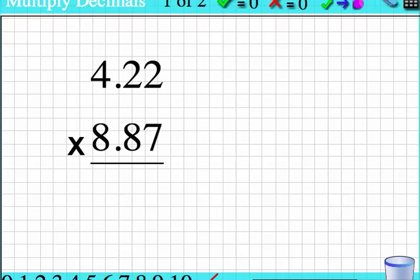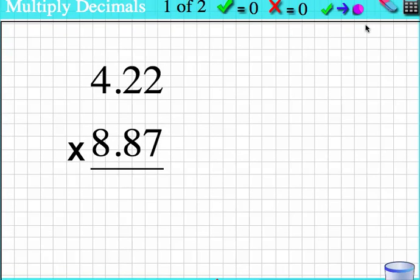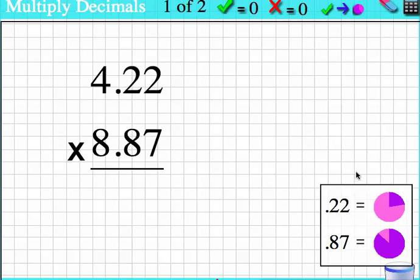I'm going to scroll up a little bit. And you'll see right here there's a little circle. If I click on this, it conceptualizes the decimals for me. So this is what .22 looks like and this is what .87 looks like.